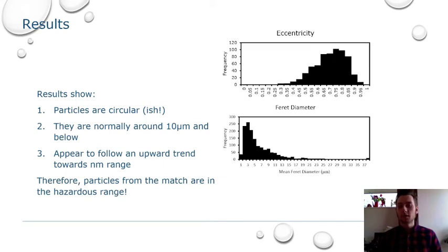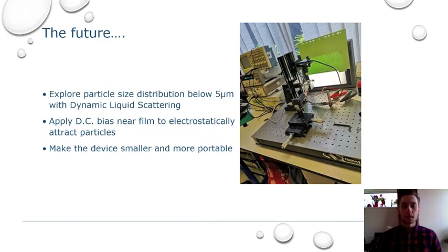But what can we do with this project in the future? Well, we can delve into this size distribution trend by utilizing dynamic liquid scattering. This is actually something I did get to try out, but there is more work that still needs to be done on it. In addition, I wanted to see whether it was possible to attract particles before they came into contact with the thin film by applying a DC bias. And finally, I wanted to make the device smaller and more portable, although I didn't quite get a chance to do that. Had I done so, it would have been great to try this with outdoor pollutants as well, just to see what the differences were between indoor and outdoor.